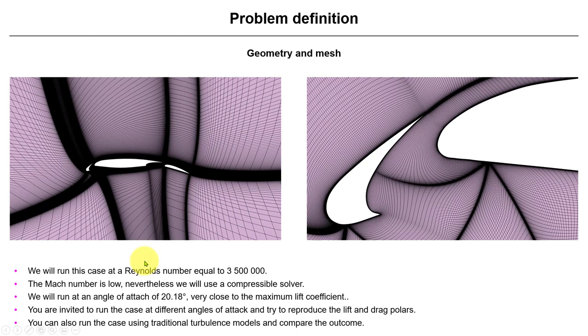Here we have a few references to show you the price you need to pay to resolve transition to turbulence. This is an extremely fine mesh. The y-plus we're talking about here is something less than 0.1, with good resolution in the streamwise direction.